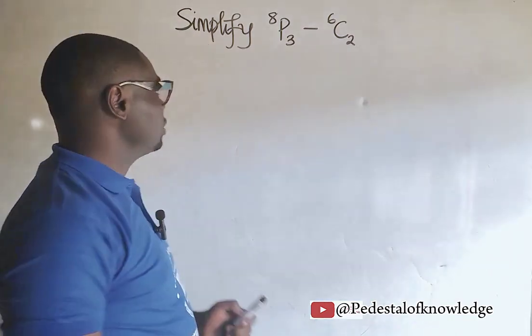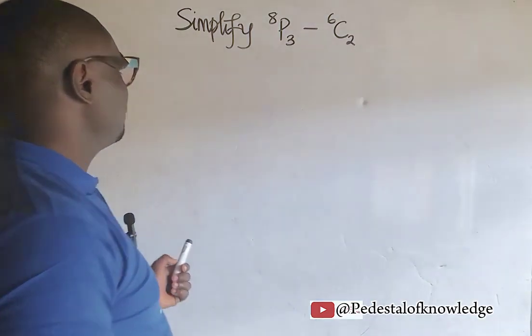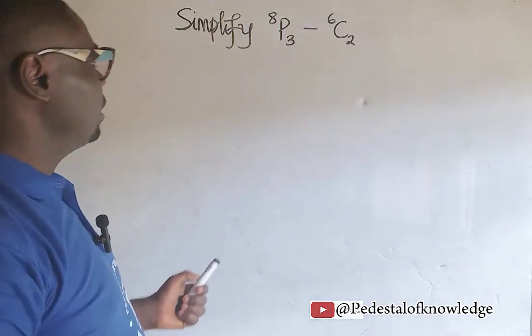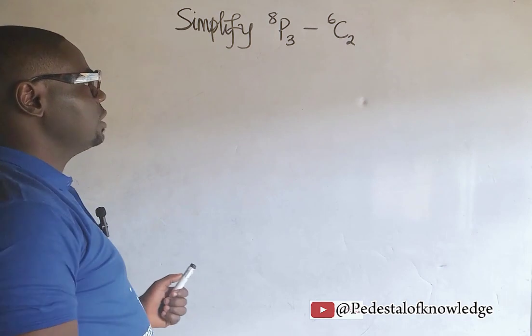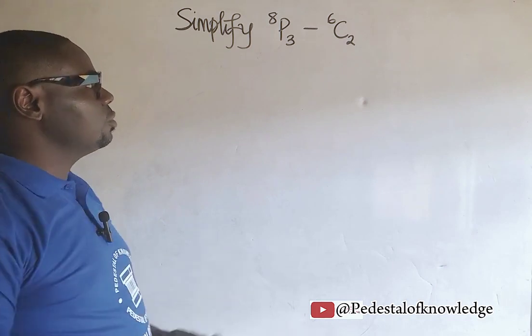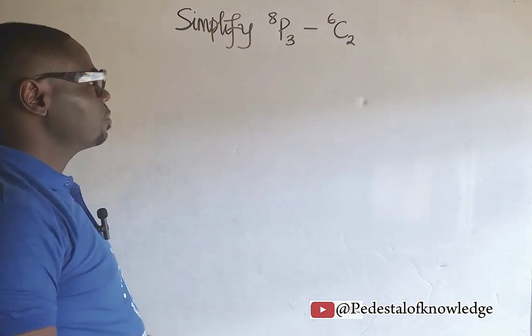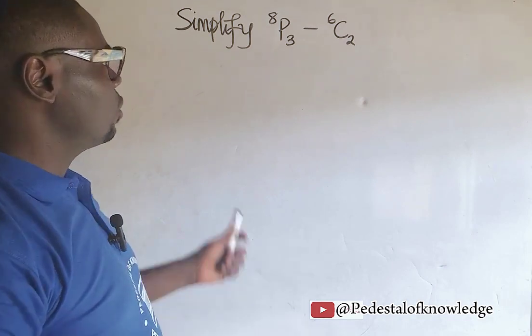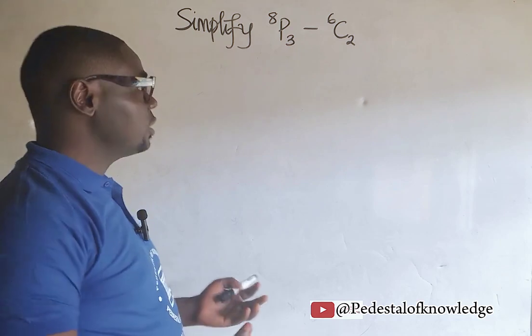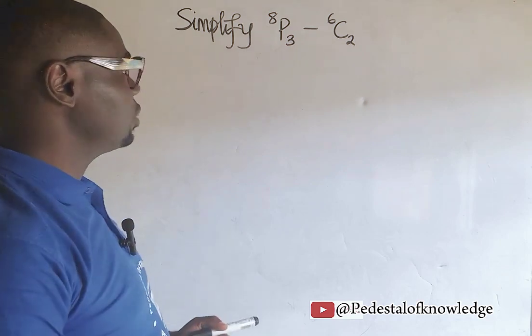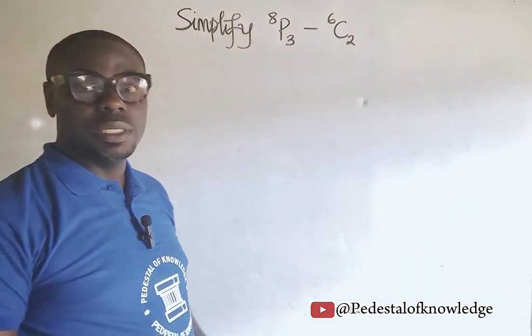Let's provide a solution to this problem: simplify 8 permutation 3 minus 6 combination 2. To solve this problem very quickly, we need to understand what permutation and combination is.